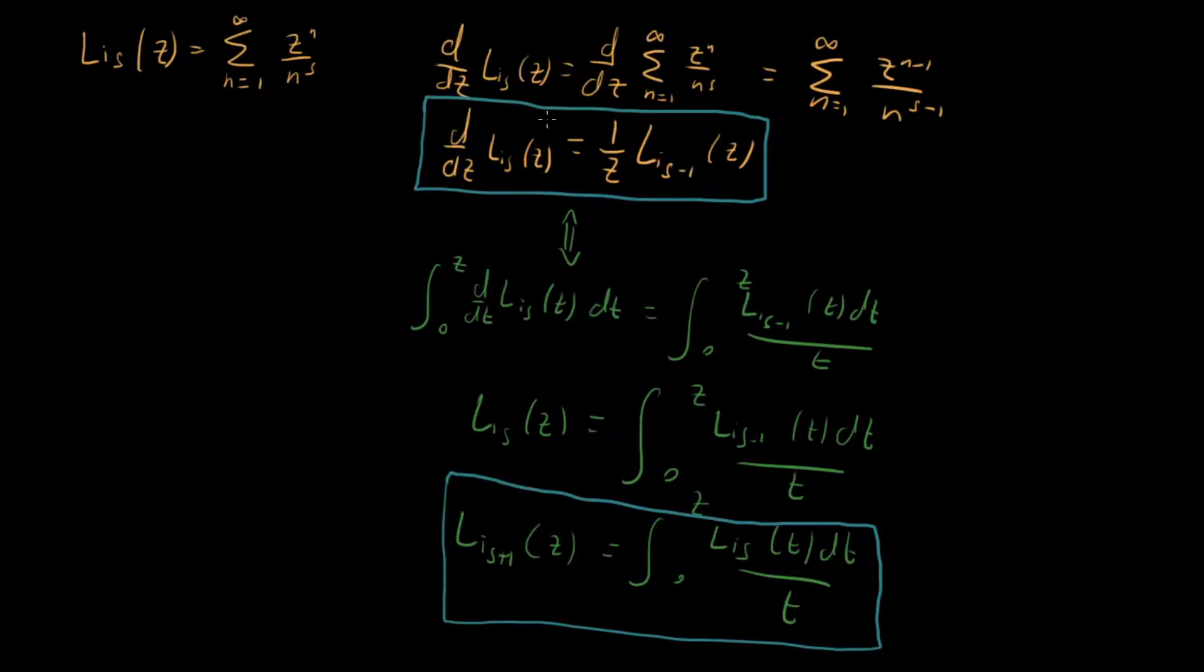So for example, if we know Li sub s equal 1 or s equal zero, then we'll instantly know how to get to minus 1 or minus 2 or minus 3. And likewise, with this property down here, we know how to get back up to 1 and 2 and 3 and 4. So that's useful.